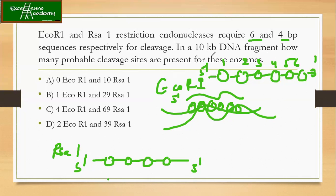Now what is the question? In a 10 kilobase pair DNA fragment, how many probable cleavage sites are present for these enzymes? They're asking what is the probability of getting the number of cleavage sites in the entire 10 kilobase pair DNA if we're using EcoR1 and Rsa1. How to do this question? This is very simple actually. You just need to know the basics of probability.